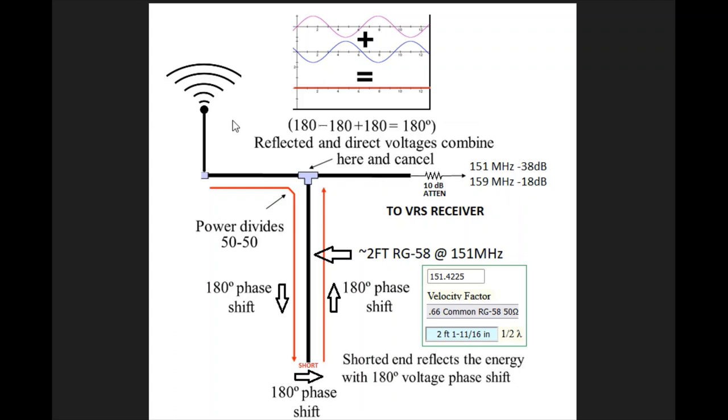Nothing's perfect on this, some does leak through, and in this particular case on the 151 frequency with our 10 dB attenuator we'll get all the way down to minus 38 dB on the other side here. So that's greatly reduced by a factor of thousands. But this is the theory of how it works.